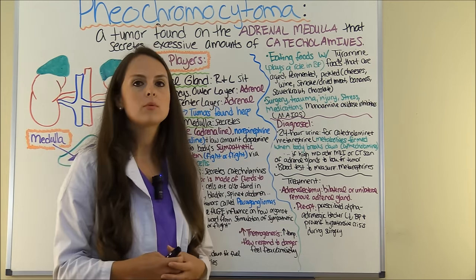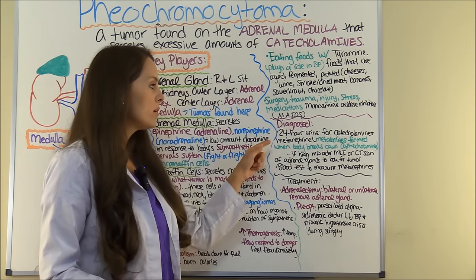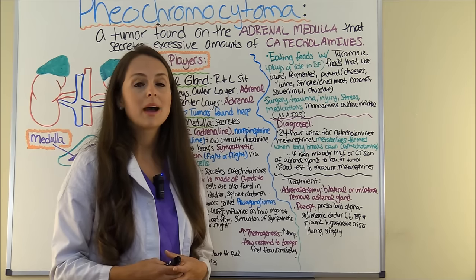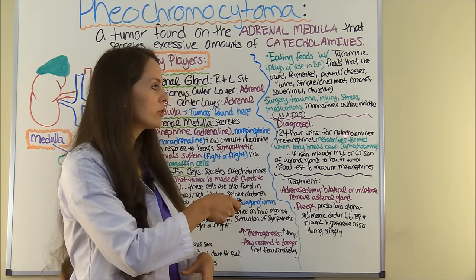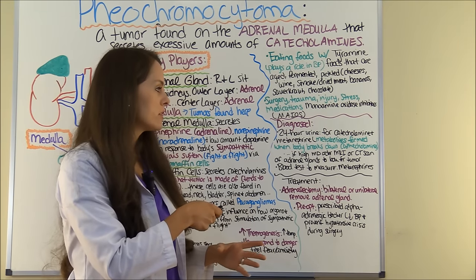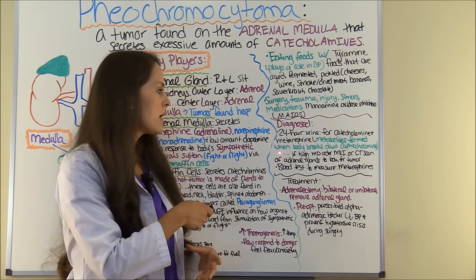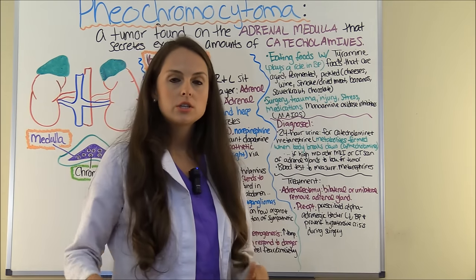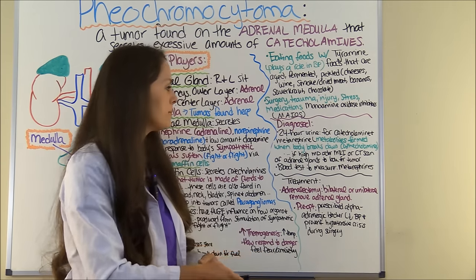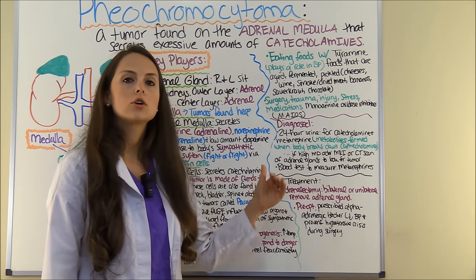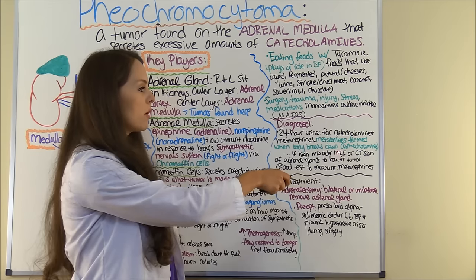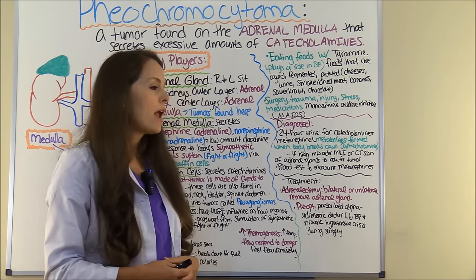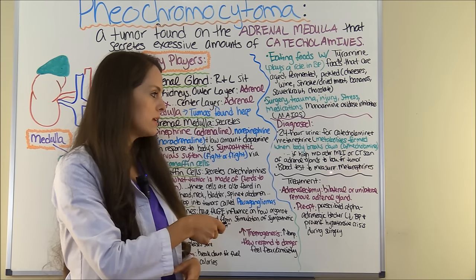How is this diagnosed? From a nursing standpoint, one way is through a 24-hour urine test. The 24-hour urine will look for catecholamines and metanephrines — metanephrines are metabolites formed when the body breaks down catecholamines. If you have excessive amounts of those in the urine, chances are you're dealing with a tumor releasing catecholamines. If this is high, the doctor may order an MRI or CT scan of the adrenal glands to look for the tumor, and a blood test to measure metanephrines.